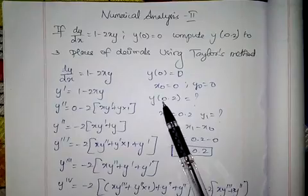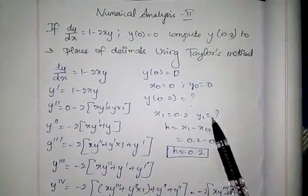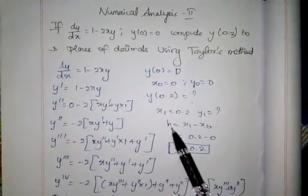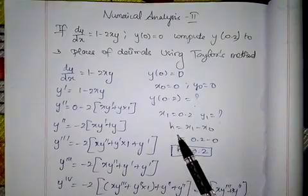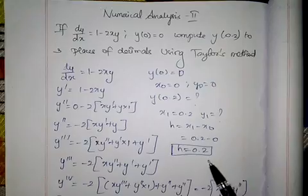The given value x1 equals 0.2, for that we have to find y1 value. The difference h is x1 minus x0, which is 0.2 minus 0, equals 0.2.